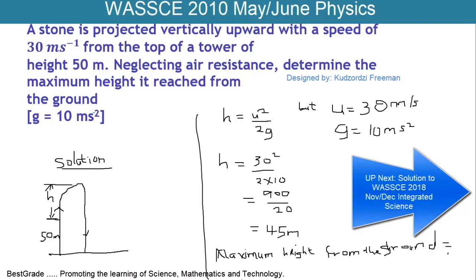And you know the height of the tower is 50 meters, and that of H is 45 meters. So 50 plus 45 is equal to 95 meters.